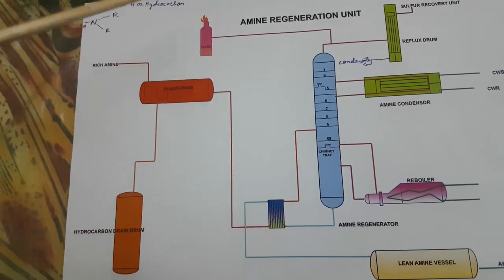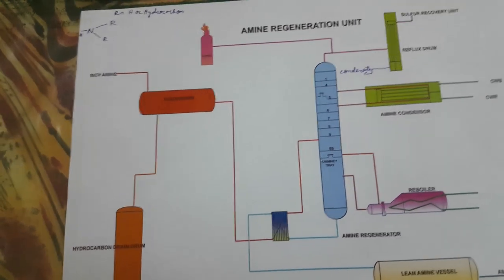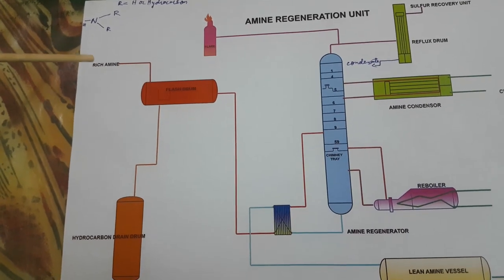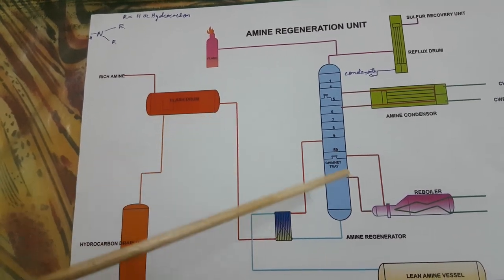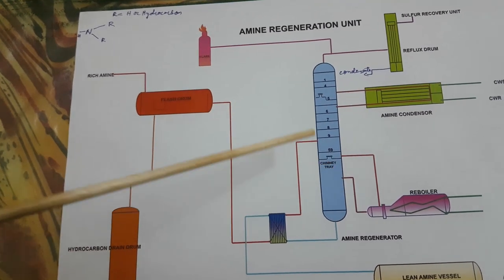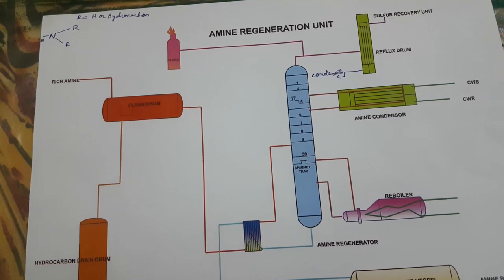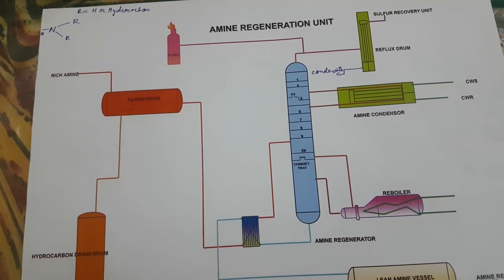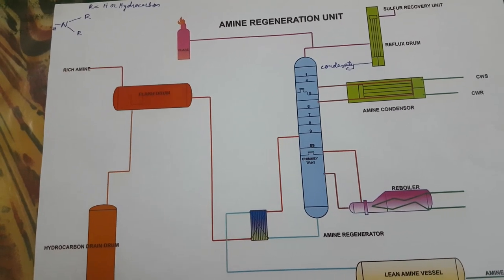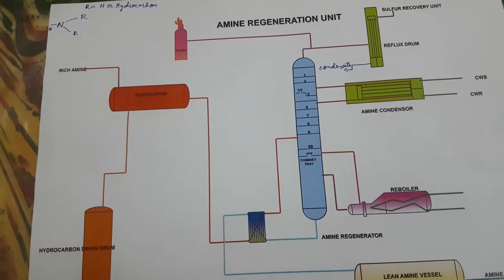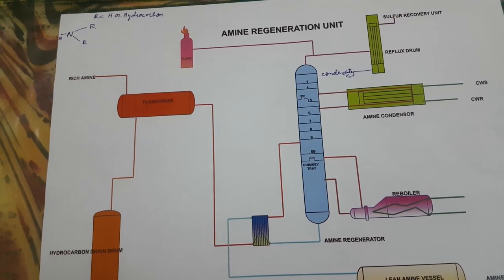What we are doing here is regenerating the amine. Regenerate means to renovate or regrow. Our main aim is to remove hydrogen sulfide, so amine is regenerated by removing hydrogen sulfide — that is why the name amine regeneration unit is given. It is a unit in which amine regeneration takes place, or rich amine is regenerated to lean amine.